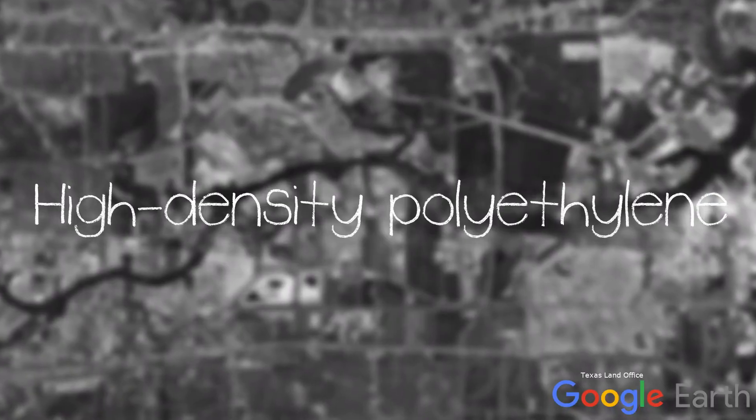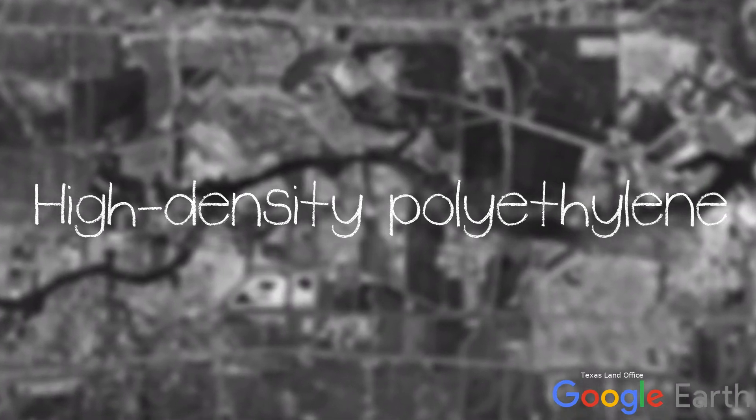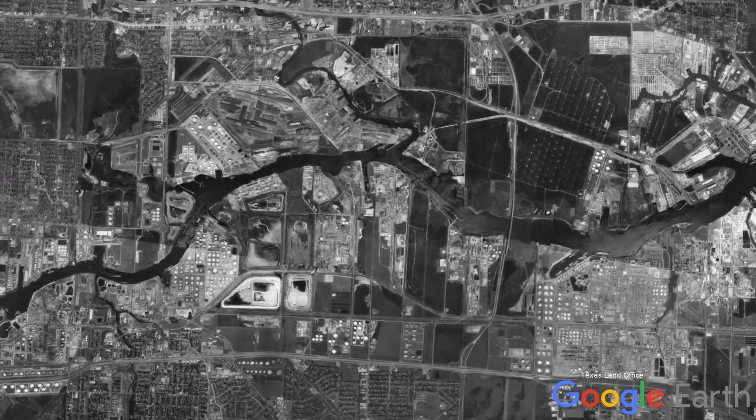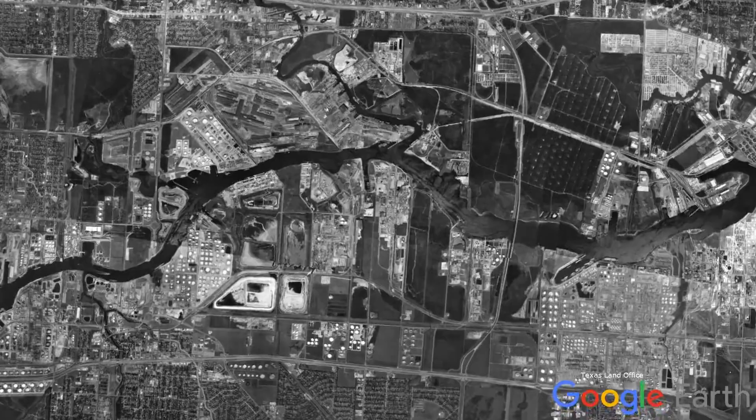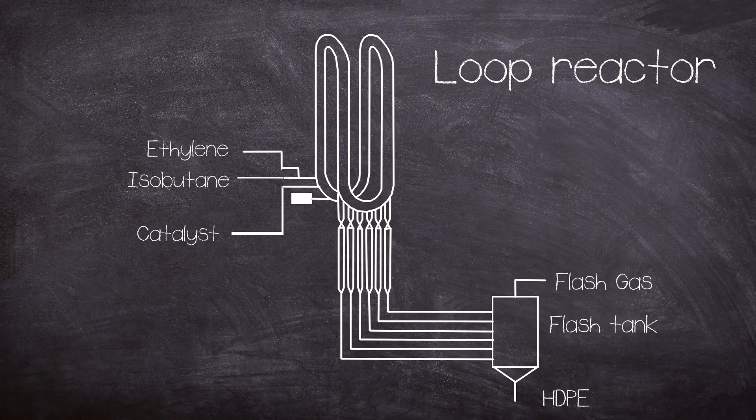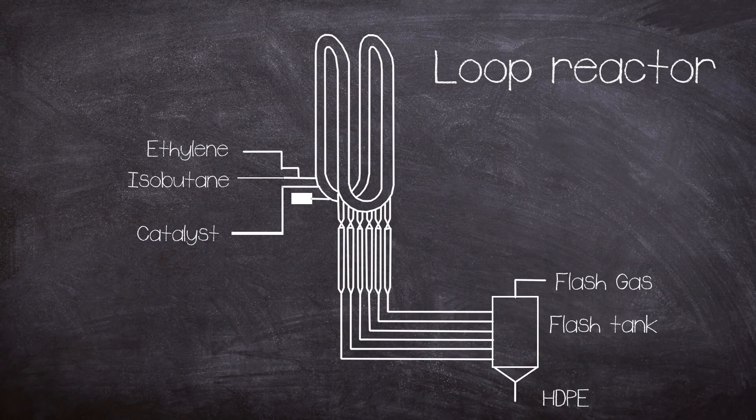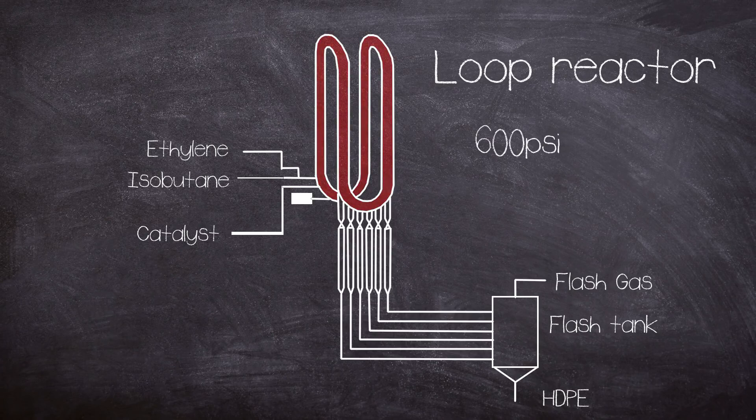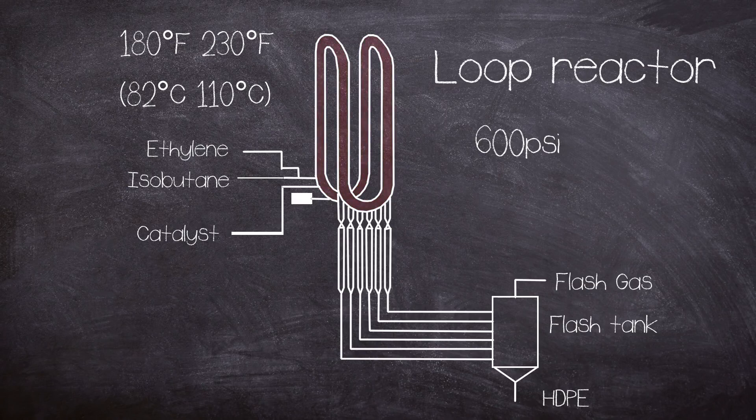High-density polyethylene is manufactured at plants 4 and 5 at the Houston chemical complex at high temperatures and high pressures. The process uses a thing called a loop reactor, which is an arrangement of 30-inch diameter pipes mounted vertically in 150-feet tall continuous circular shaped structures. This heats and pressurizes the chemical mixture to 600 PSI and to a temperature range of 82 to 110 degrees Celsius.